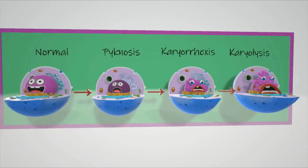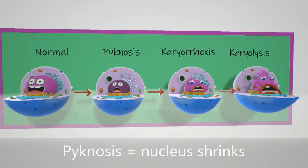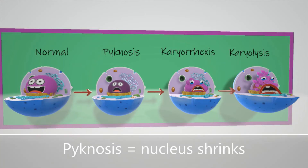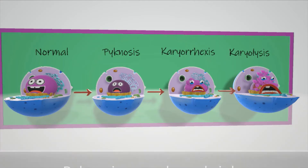First, there's pycnosis. 'Pyc' means condensing, becoming smaller, because pycnosis is basically when the nucleus shrinks. It becomes a smaller basophilic mass. It's being prepared for destruction.